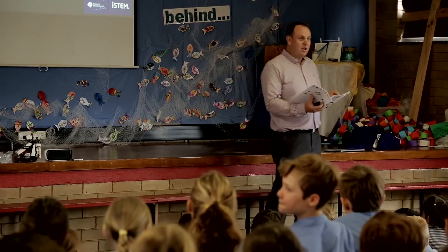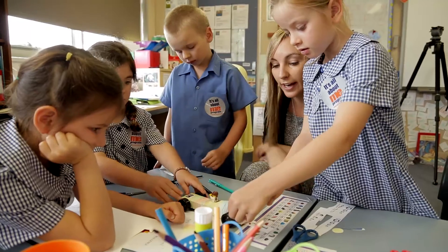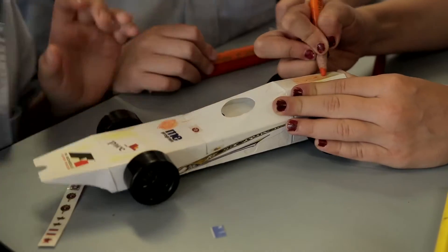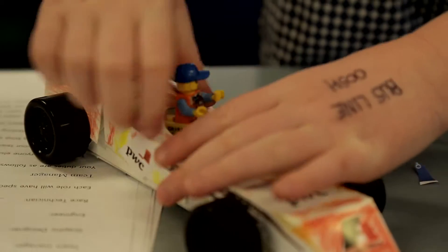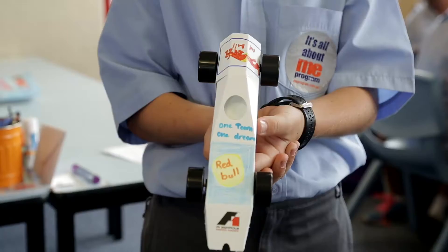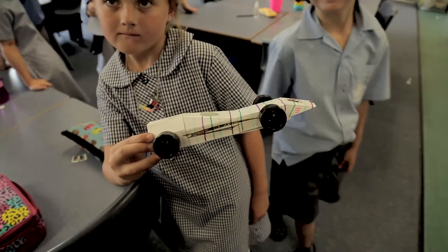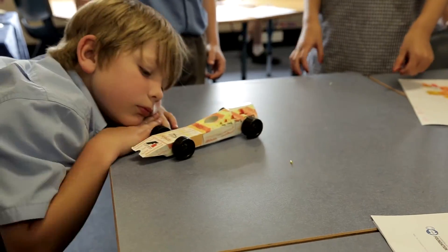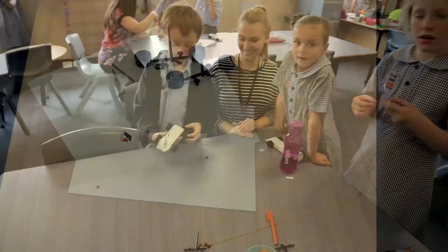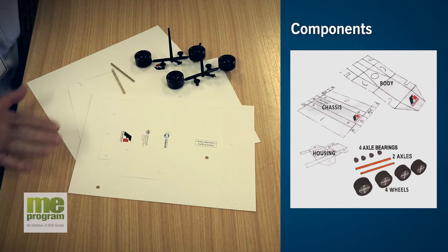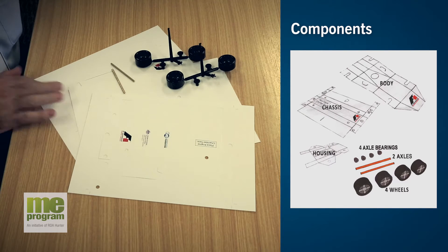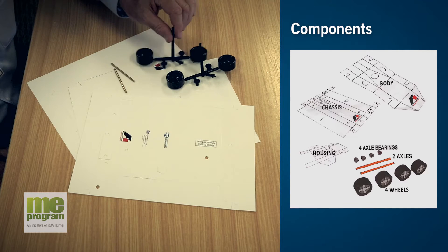There's a set of instructions and you're also going to learn a little bit about teamwork today. There's five parts involved in making a paper car: three paper components, two axles, and four wheels.